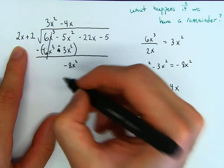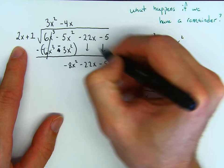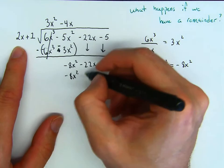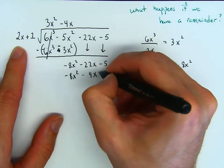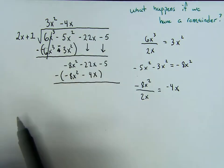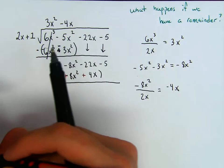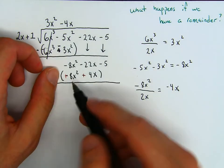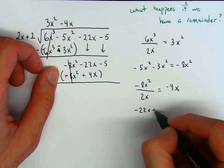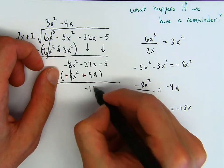We have to bring down the rest of the terms. Negative 4x times 2x is negative 8x squared. Negative 4x times 1 is negative 4x. Parentheses, parentheses, subtract. This negative times this negative 8x squared makes this a positive. So negative 8x squared plus 8x squared cancels. This is negative 22x plus 4x, which will be negative 18x. So we have negative 18x over here. Bring down the minus 5.